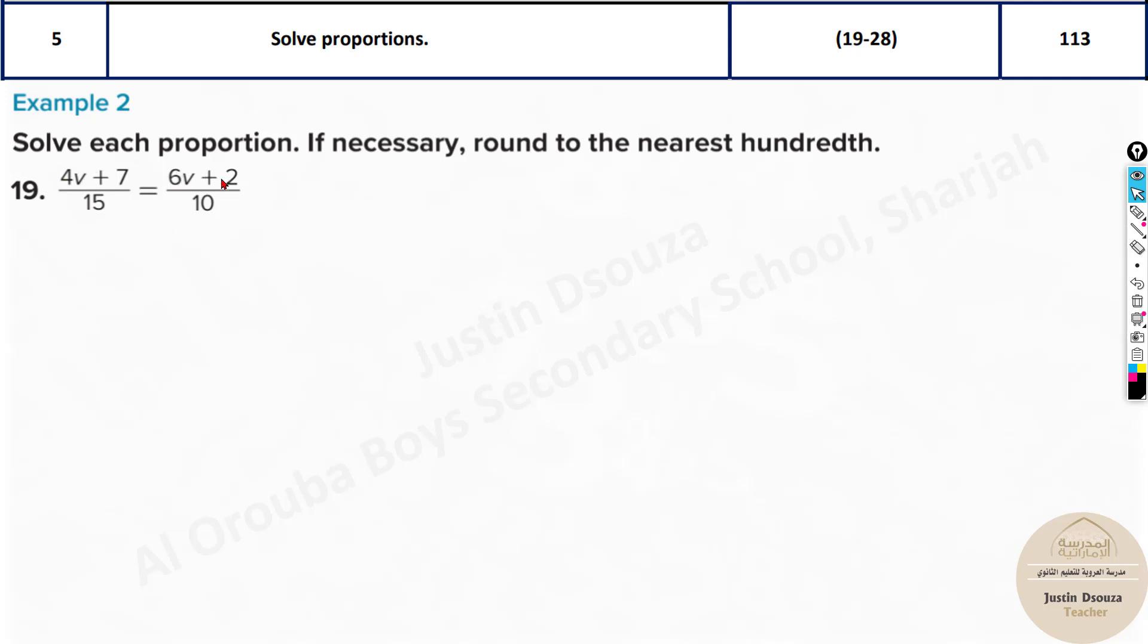How would we start solving this? Look, the above terms are together. This term and this term is together, and this below term can be easily cross-multiplied. So I'll write it out: 4V plus 7 divided by 15 equals 6V plus 2 divided by 10. The best and easy way would be just cross-multiplying because there's an equal sign in between. Don't keep anything in the denominator because it's very hard. Try to make everything in the numerator.